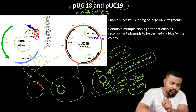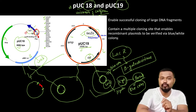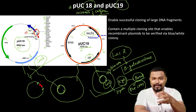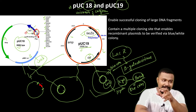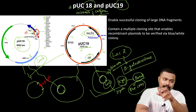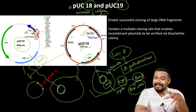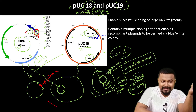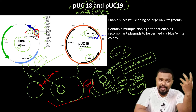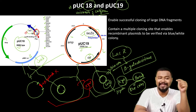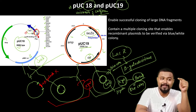If a gene of interest is inserted into the multiple cloning site, the lacZ gene is disrupted. When lacZ is disrupted, beta-galactosidase is non-functional. The bacteria cannot break down X-gal, so no blue color is produced — instead, white colonies form.